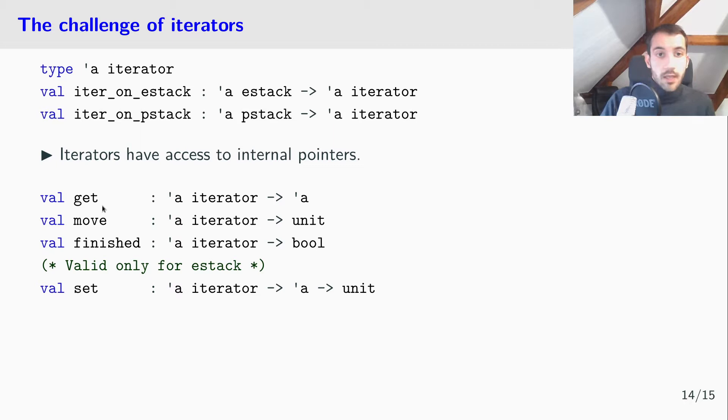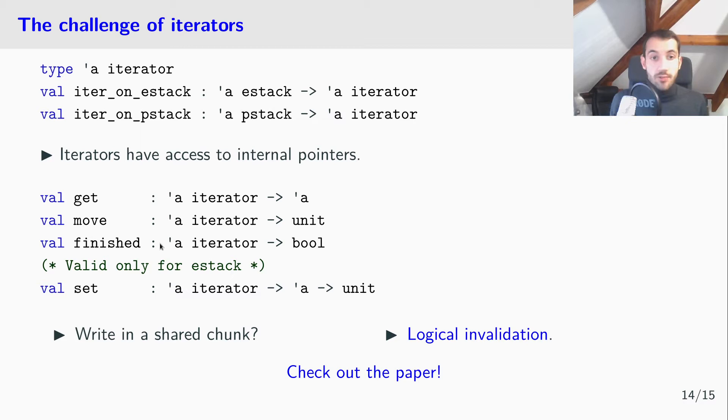We can get the current element, we can move in the iteration, we can test if we reach the end of the stack, and maybe the most important function from the verification point of view is set, which allows us to change an element in an ephemeral stack. And why is this operation interesting? It's because what happens if we try to write in a shared chunk? Because we can have multiple iterators on the same structure, writing a shared chunk can lead to a logical invalidation of other iterators. So all the details are in the paper, so check out the paper.